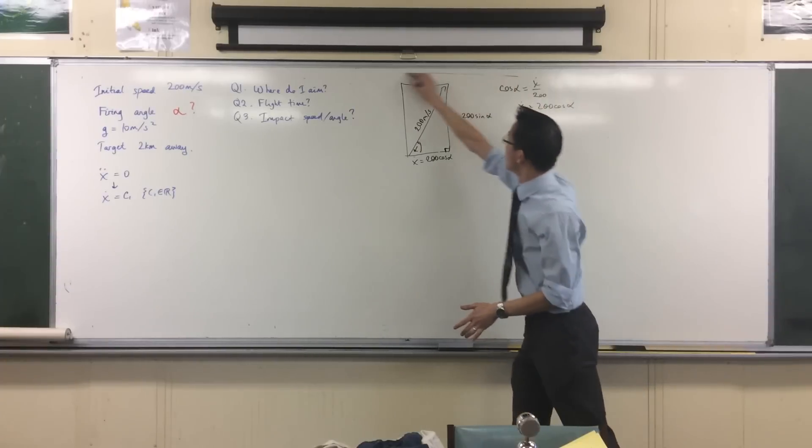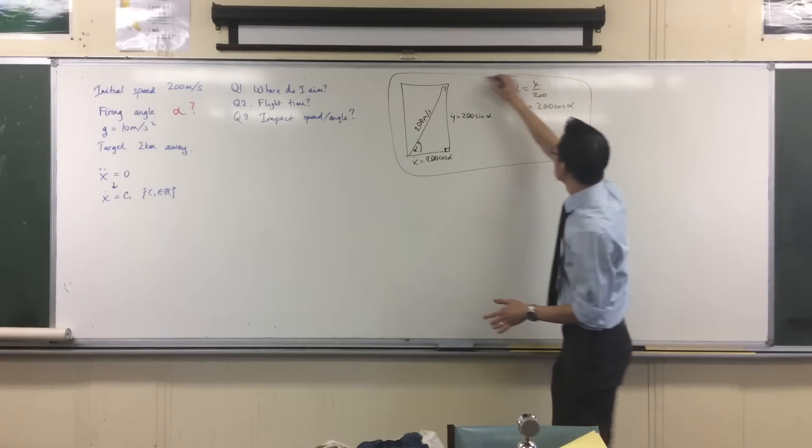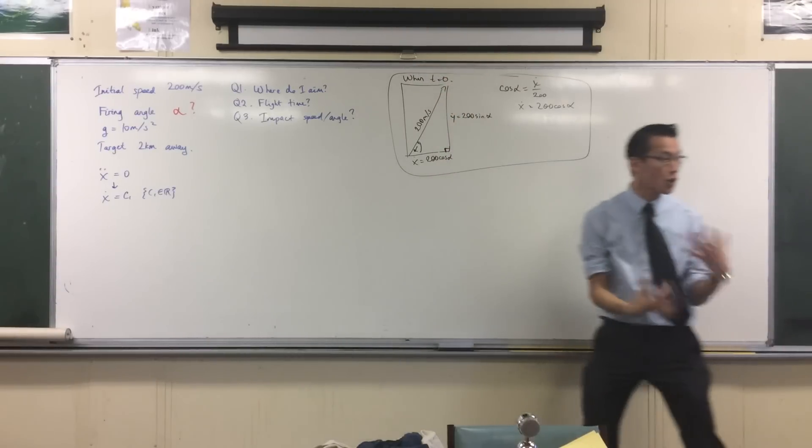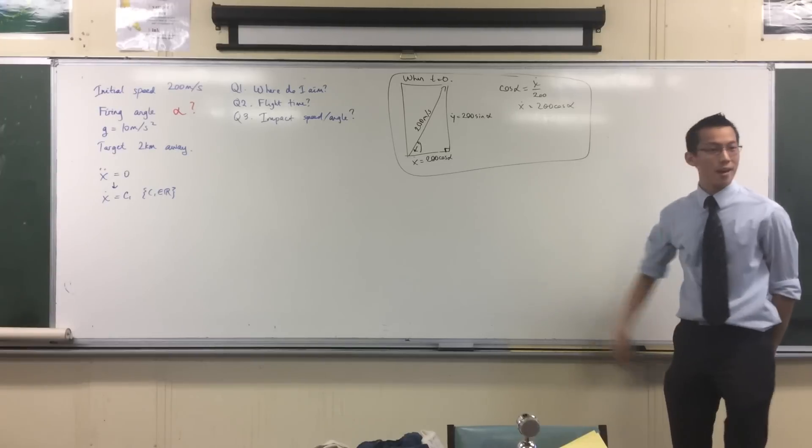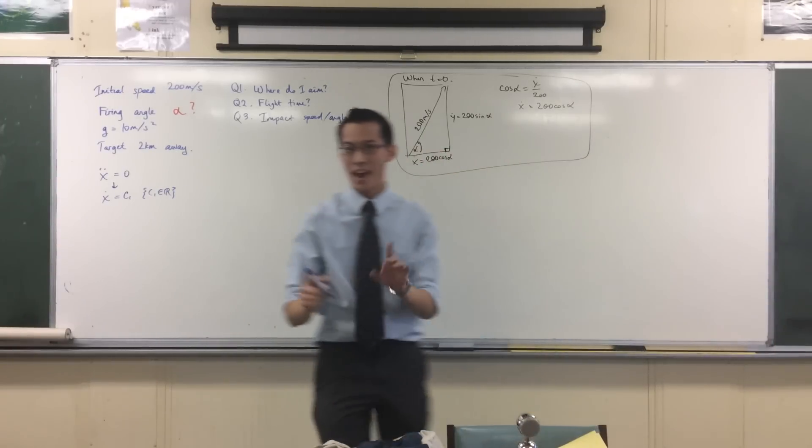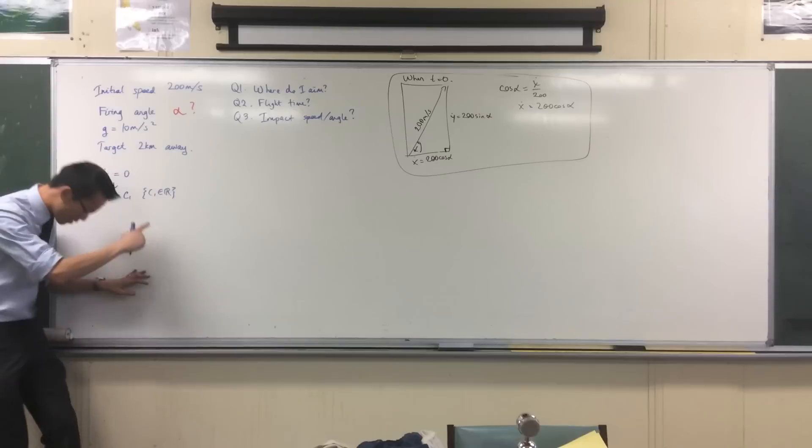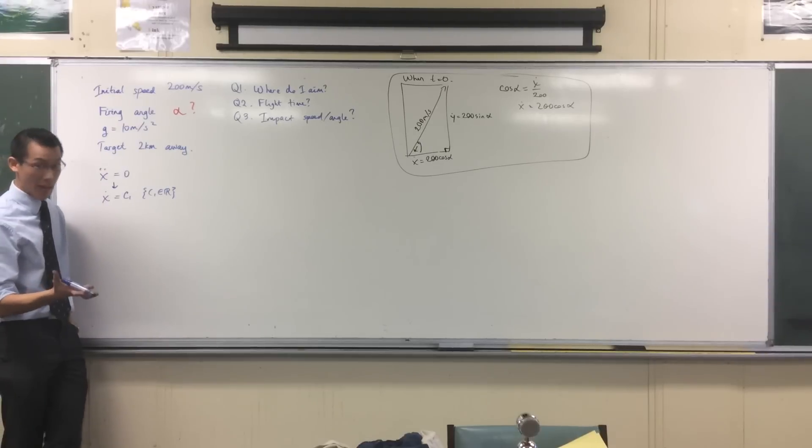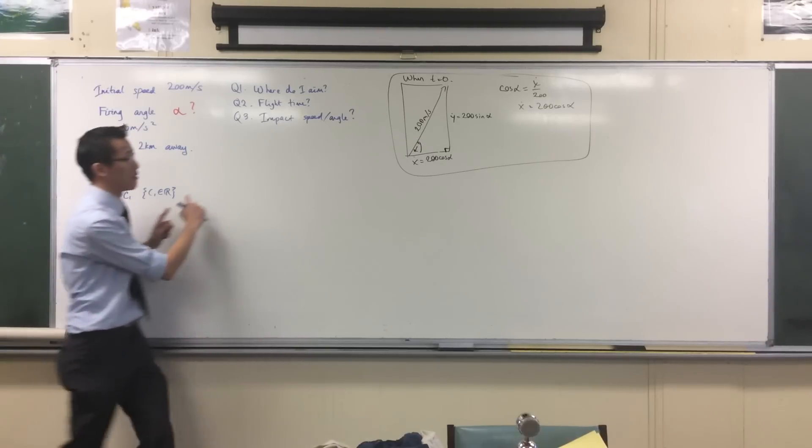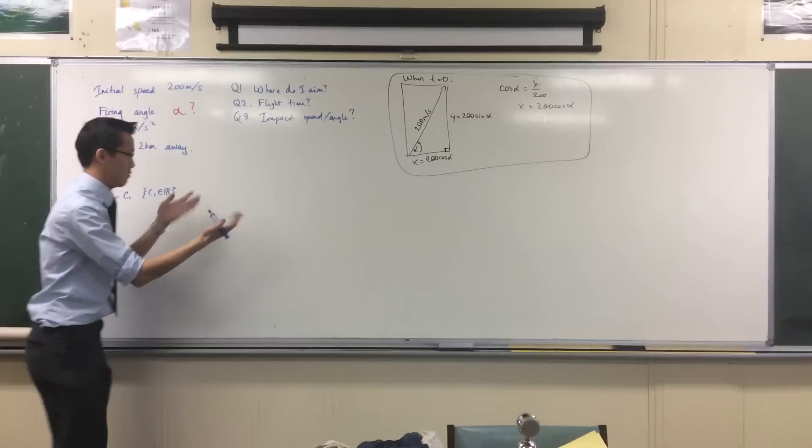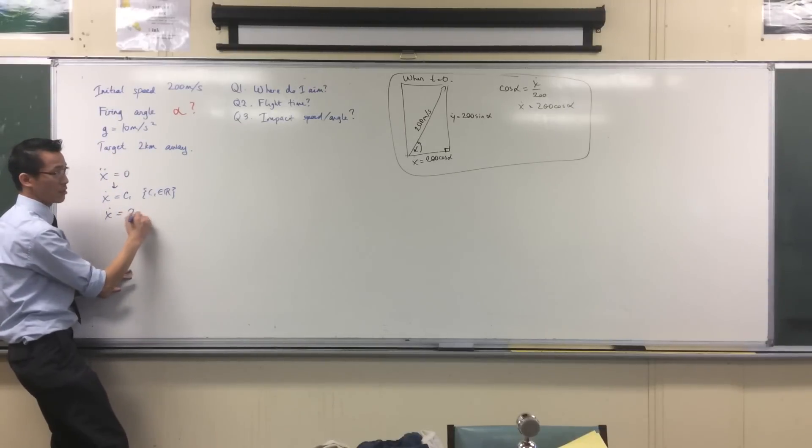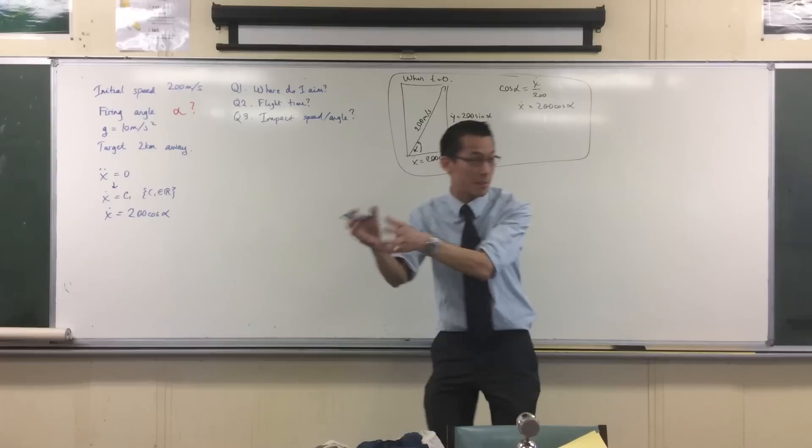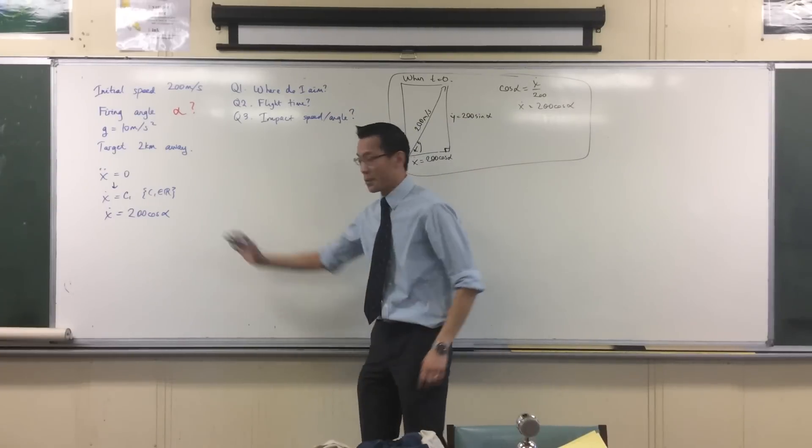You can see where I get that from. So great, now I've resolved this out. This is when time equals zero - this is resolving initial velocity. Great, now that I've done that I can come back over and say okay now I can evaluate this constant. What do I get when time equals zero? This is a time equation, x dot is this, so it's just going to be 200 cos alpha.